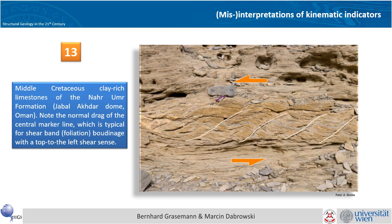Again a nice SC prime fabric type of shear band boudinage, from Oman from Janos Ural group. You see this nice sigmoidal shape of foliation between the C primes, which gives you a nice top-to-the-left shear sense.